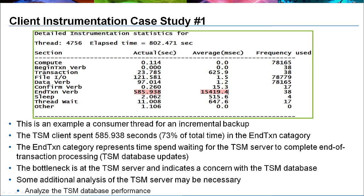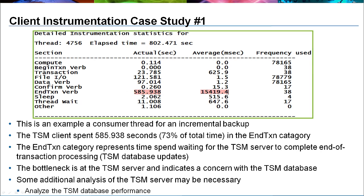The first case study is an example of a consumer thread for an incremental backup. The first step is to find the category that makes up a majority of the total elapsed time. In this case, the thread has a total elapsed time of 802 seconds. The category responsible for the majority is End TXN Verb with 586 seconds — 73% of the total time. End TXN Verb represents the time the client spends waiting for the TSM server to complete end-of-transaction processing, including updates to the TSM database. The bottleneck is the TSM server database; use TSM server instrumentation for additional analysis.